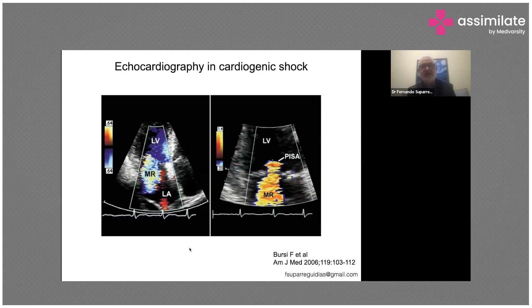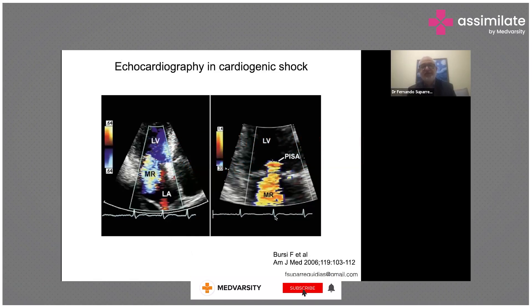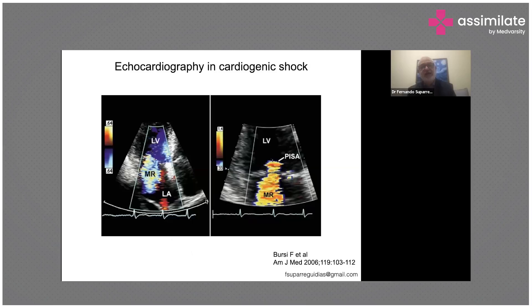Echo is very important — the echocardiogram. As you can see in the case of our patient, you can identify mitral regurgitation, the contractility of mainly the left ventricle, the size of cavities, and you can estimate the systolic pressure in the pulmonary artery.